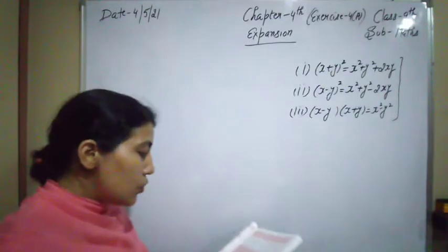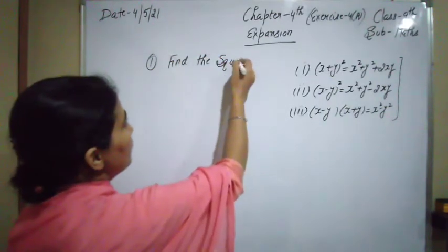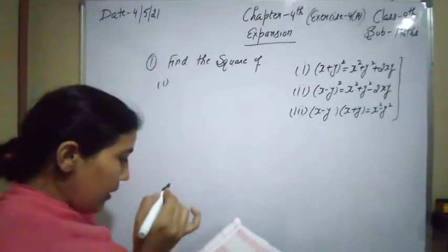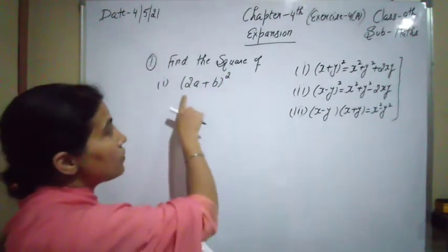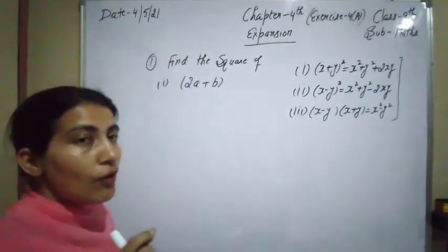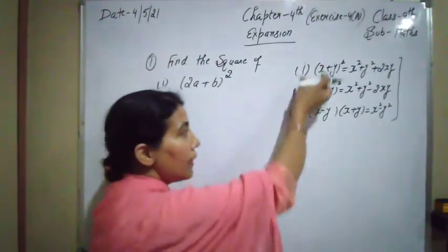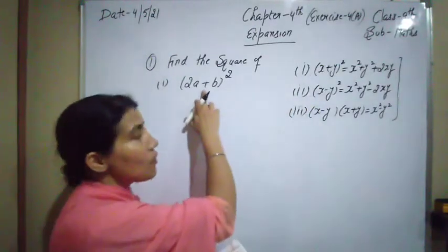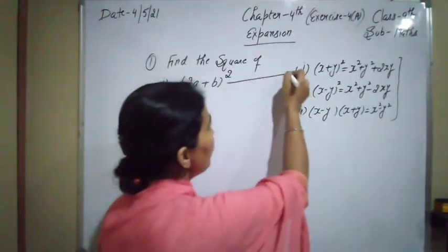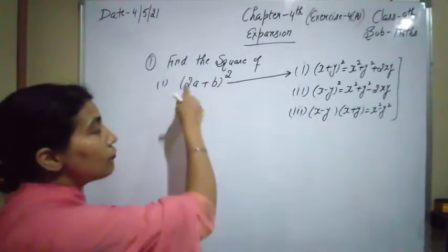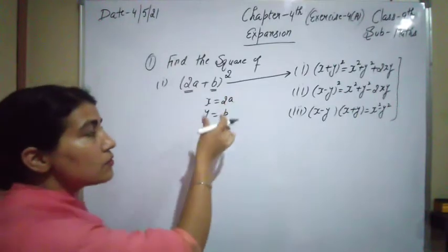Let's start the first question of this worksheet. In exercise 4A, the first question is: find the square of. The first part is (2a + b)², so we have to find its square. From which identity do we use? Obviously the first one, because here is a positive symbol — it is in the form of (x + y)². So we compare: the value of x is 2a, and the value of y is b.